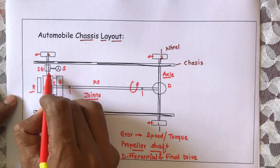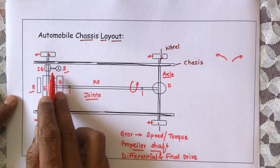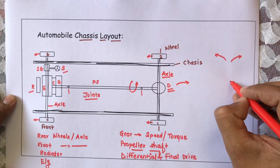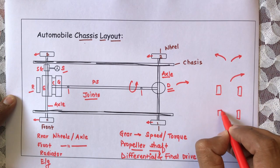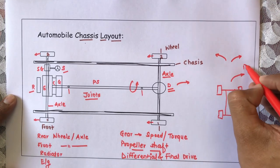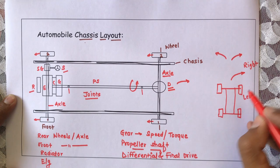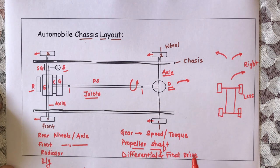The steering gearbox and steering are used when I need to take a turn. One more function of the differential gearbox: if I have to take a right turn, the inside wheels and outside wheels are different. The differential gearbox will provide lesser speed to the inner wheels compared to the outer wheels — that is the function of the differential gearbox. So far, we have discussed the different components placed on the automobile chassis and the function of each component.